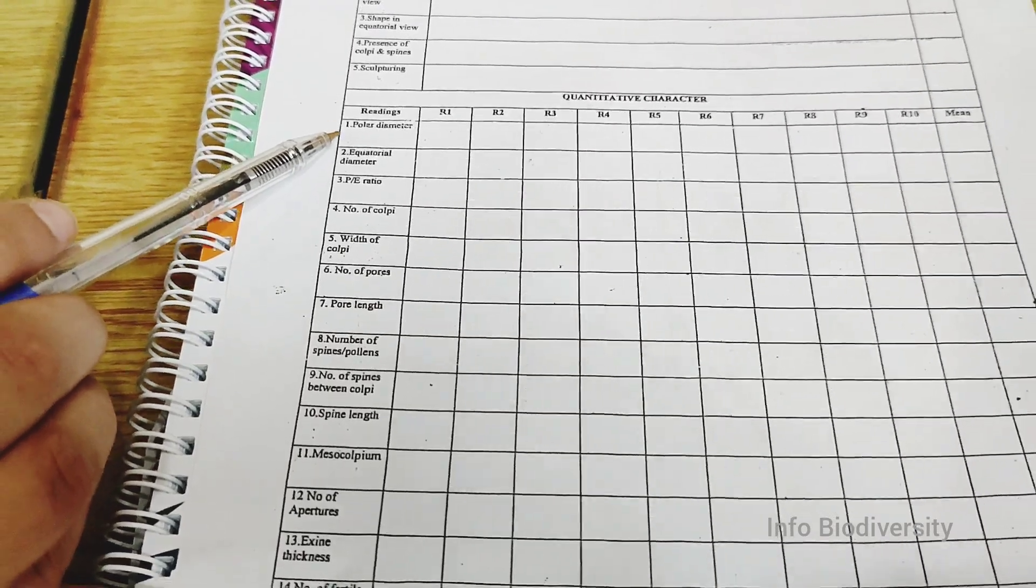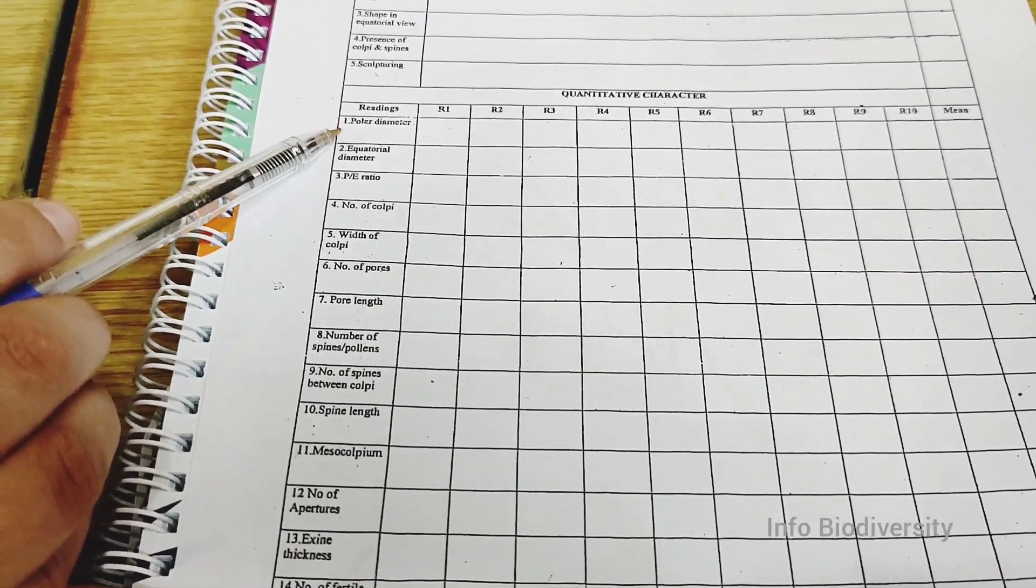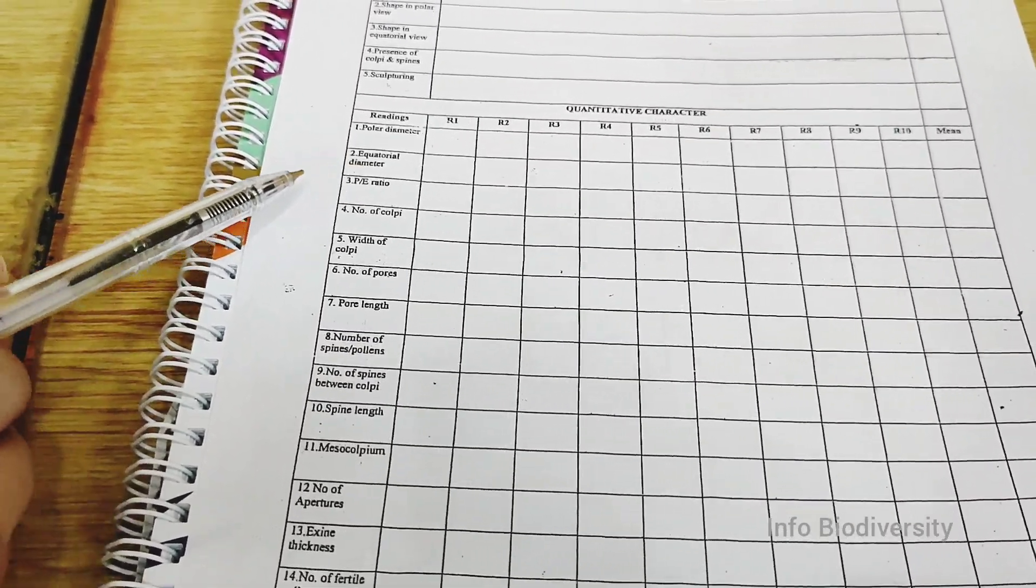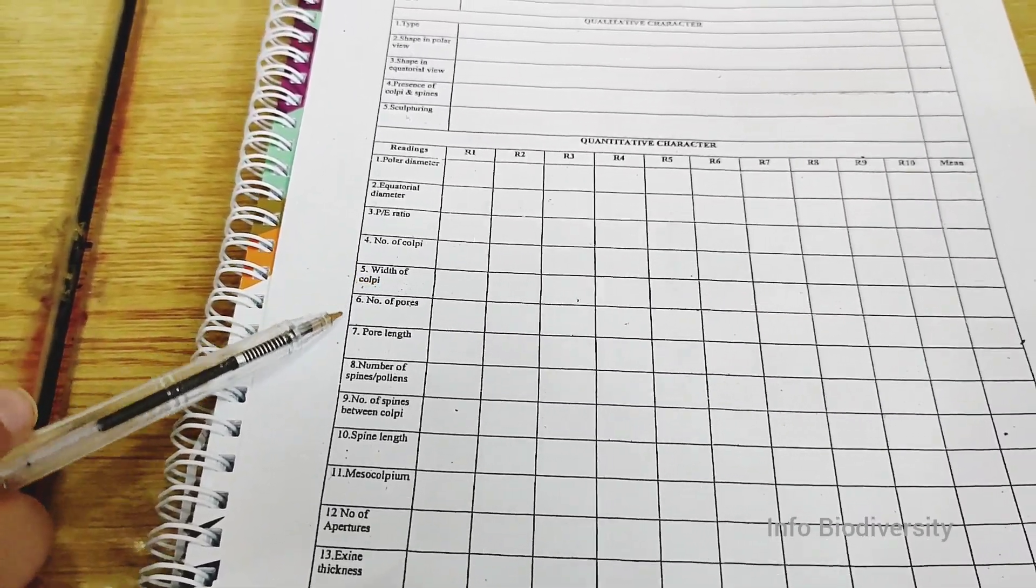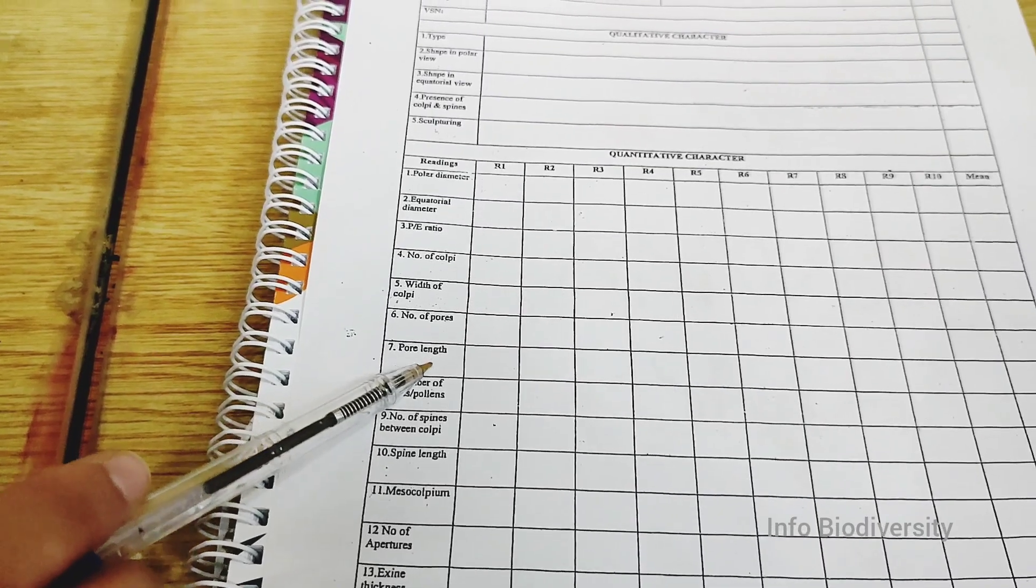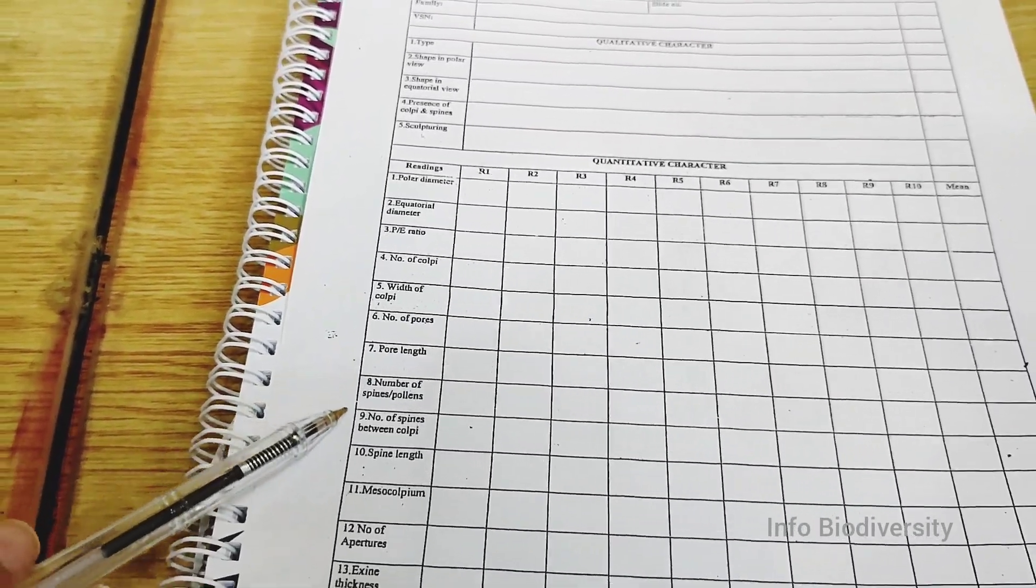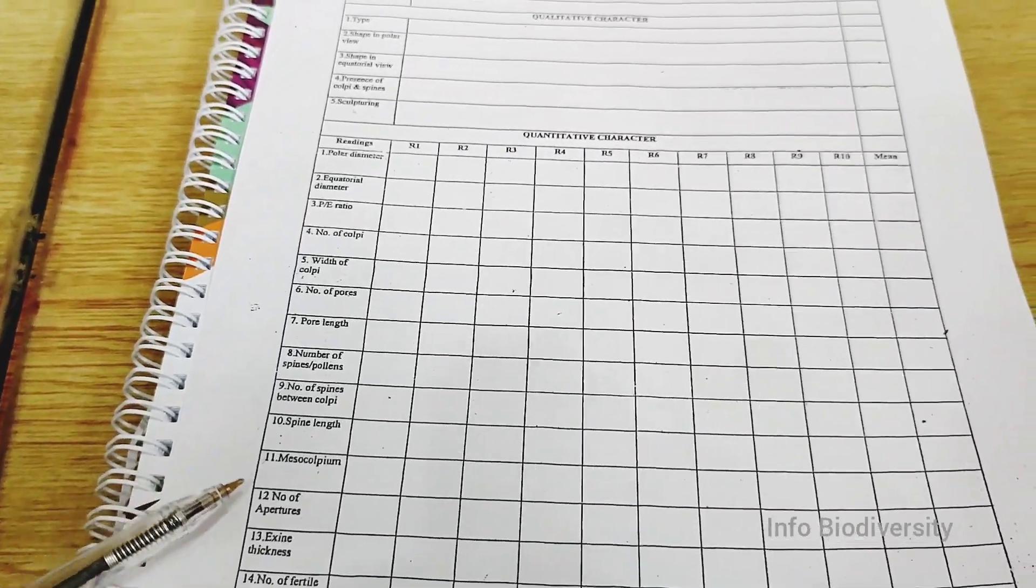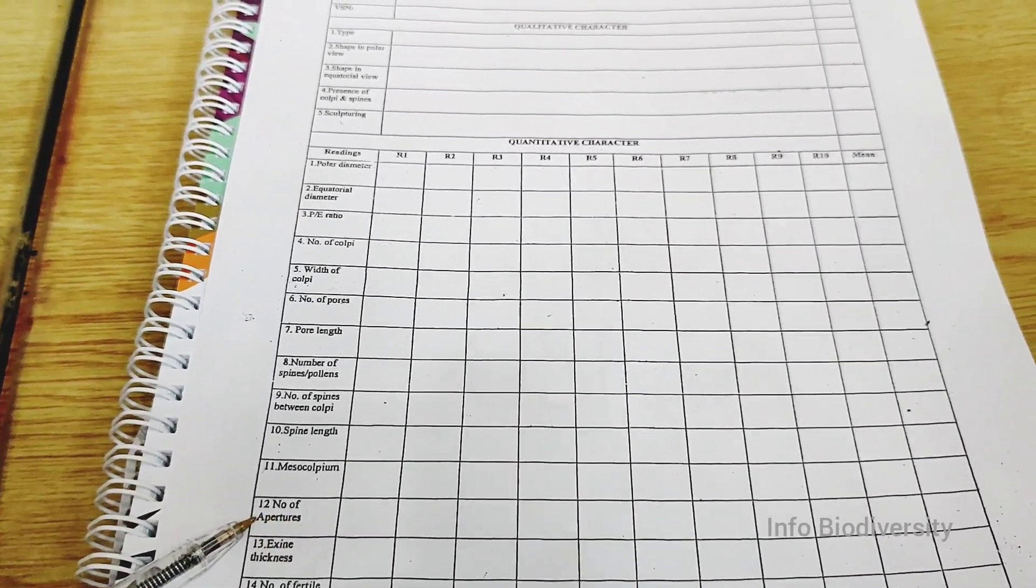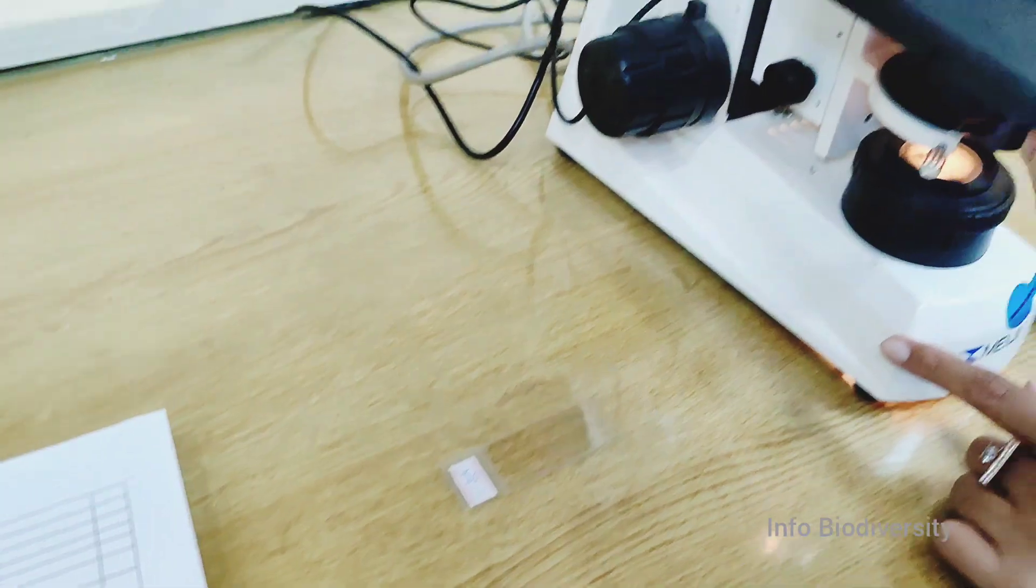The quantitative characters include the polar diameter, equatorial diameter, P/E ratio, number of colpi, width of the colpi, number of pores, number of spines, length and so many other quantitative characters. This is the key that is used to describe the pollen under light microscope study.